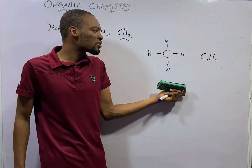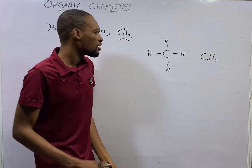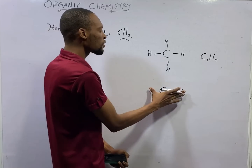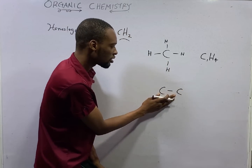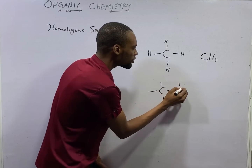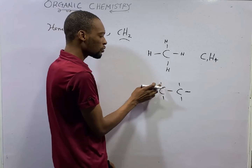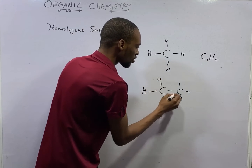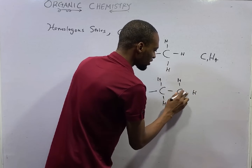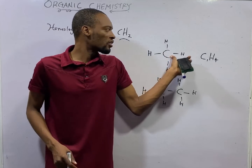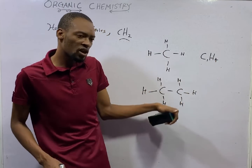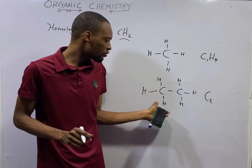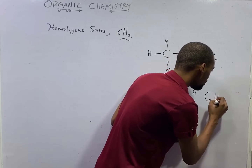The next member of this compound will simply be the one with two carbons. If we have the one with two carbons — this is one carbon, two — the second member has two carbons. There is already one bond here, so this carbon is left with three bonds, and similarly the other carbon is left with three bonds. When you fill hydrogen around all four positions of each carbon, you get C2H6.